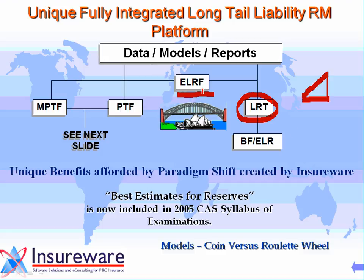The extended link ratio family — the starting model there is actually the MAC method or the MAC model, which is just a regression formulation of volume weighted averages.